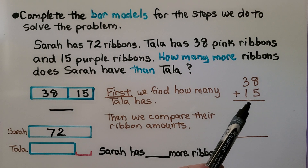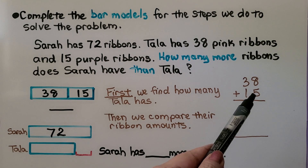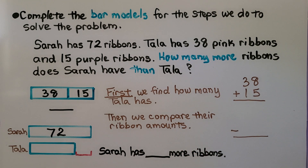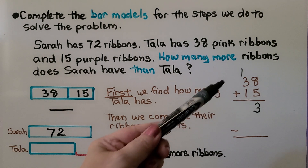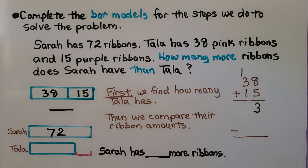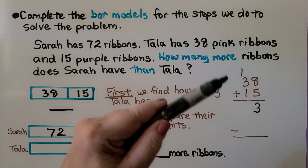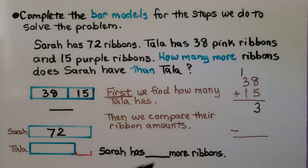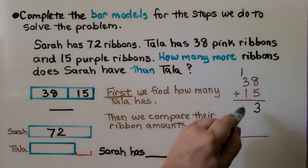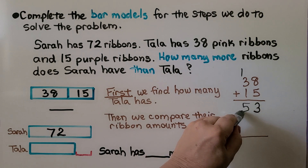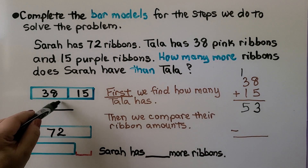We stack them in place value columns and start with the ones. 8 ones plus 5 ones is 13 ones. We regroup the 10 and write the 3 in the ones place. Now we add 3, 4, 5 tens — that's 53. So we know Tala has 53 ribbons.